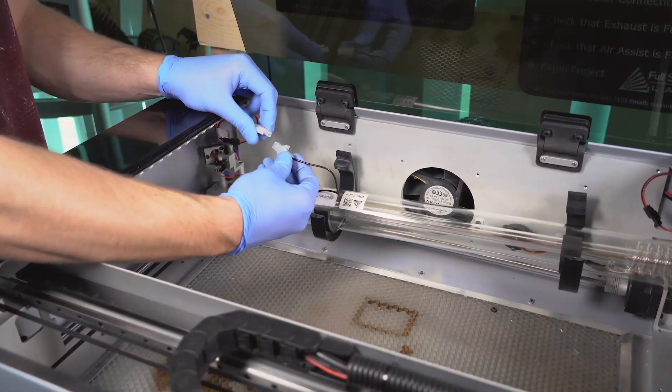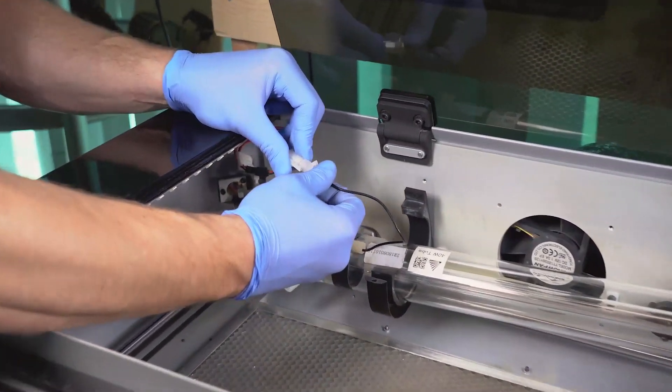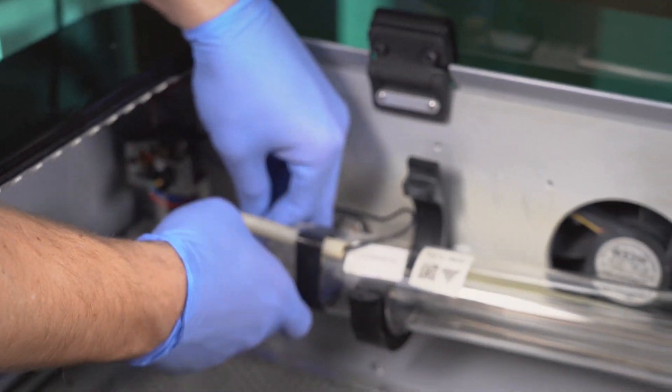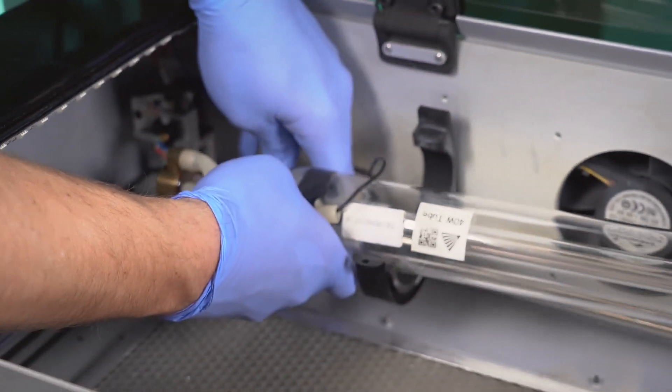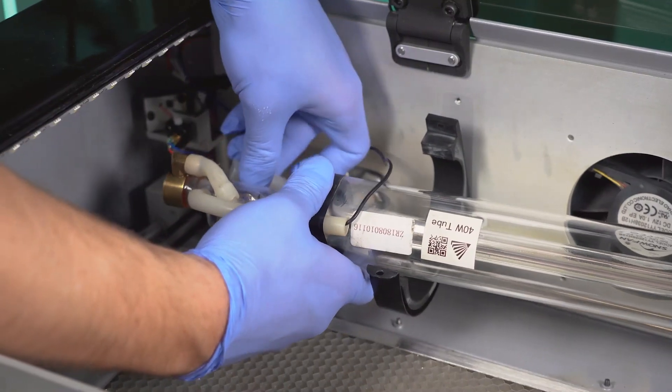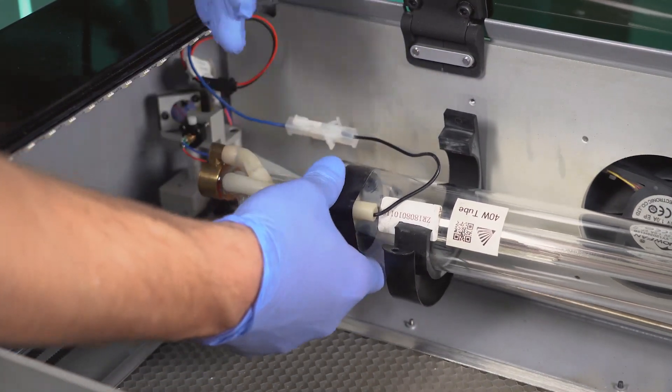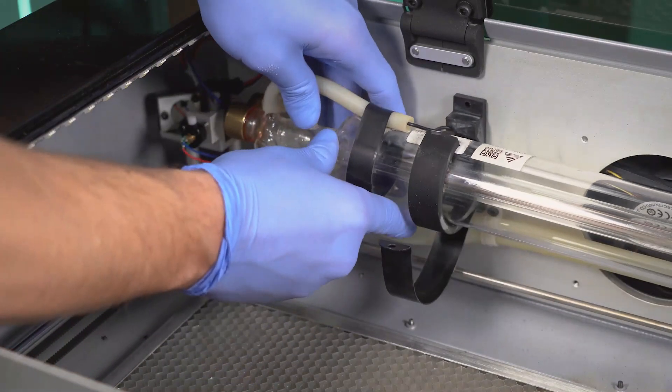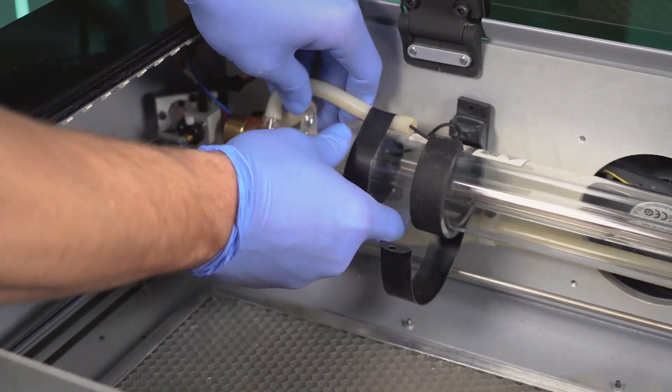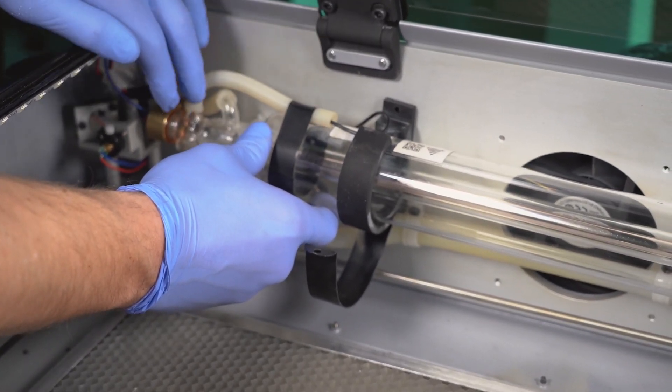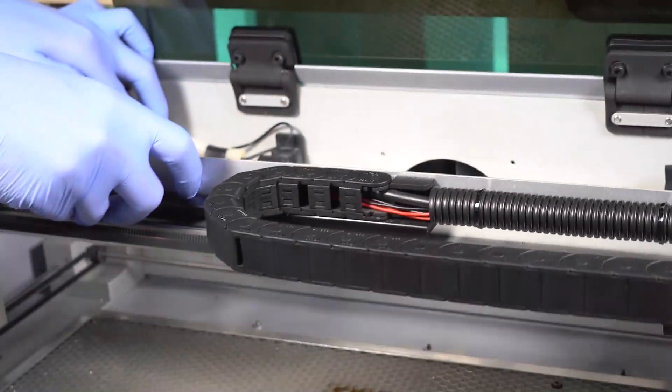Once that's reconnected, we're going to reconnect our electrical line by simply clipping it in place. Once that's reconnected, we can set it in its bracket, making sure that this line is facing upwards so that the gantry does not get in the way.